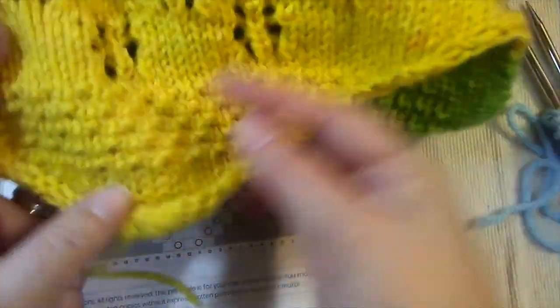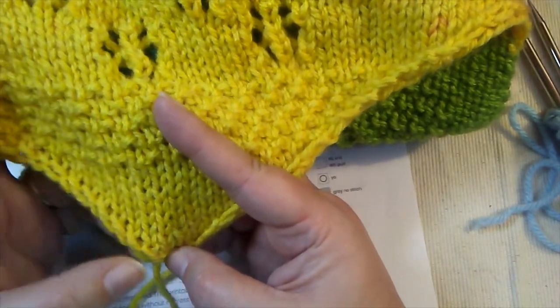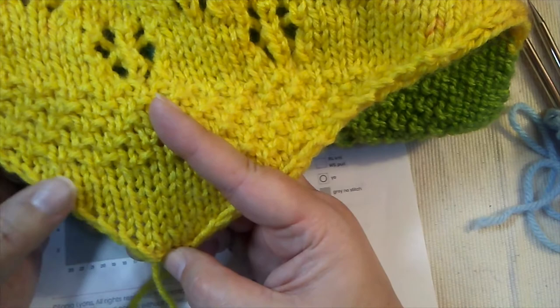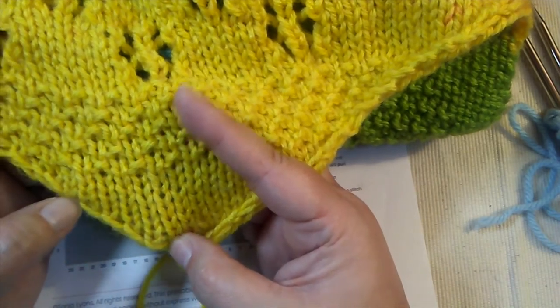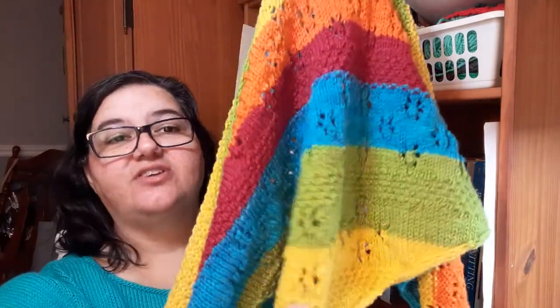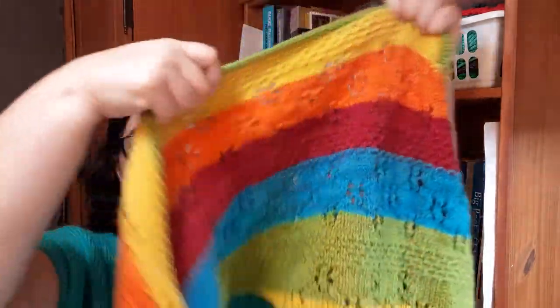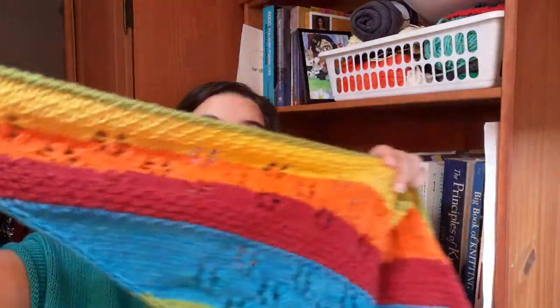This shawl here uses that construction method. I increased along every row. I worked yarn overs but then I knit them through the back legs to close them up, but they're worked on every single row. And you can see this is a fairly shallow triangle but it has a long wingspan, which is something I prefer in my triangle shawls.